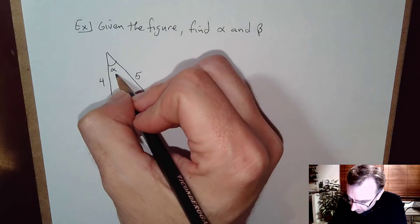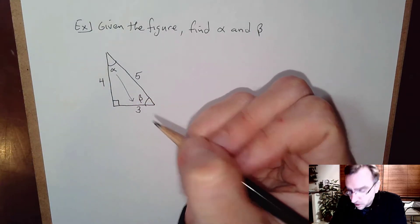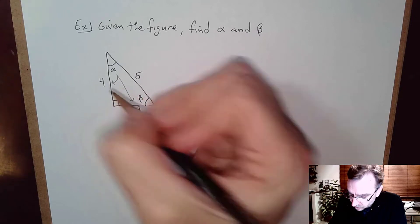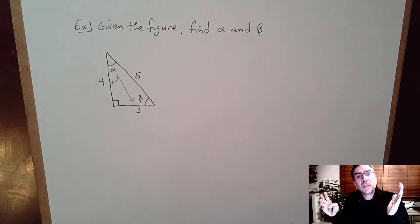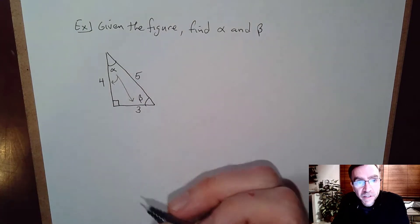So let's start with alpha. Looking at alpha, the side opposite measures three units and the side adjacent measures four units. So I'm thinking opposite over adjacent, what comes to mind? Well tangent, right. Tangent of an angle is opposite over adjacent.